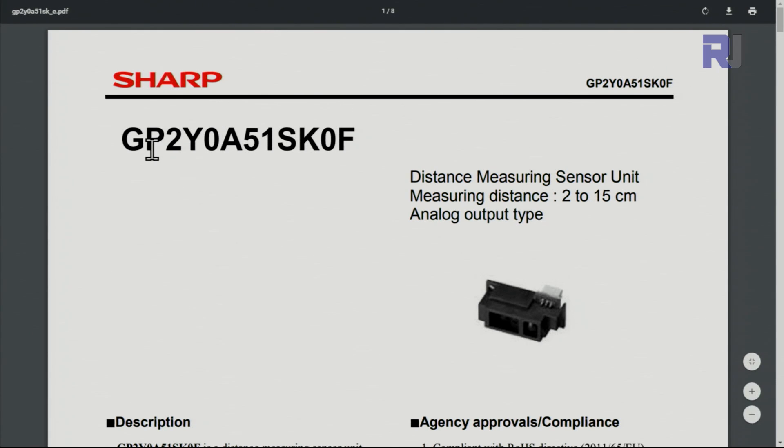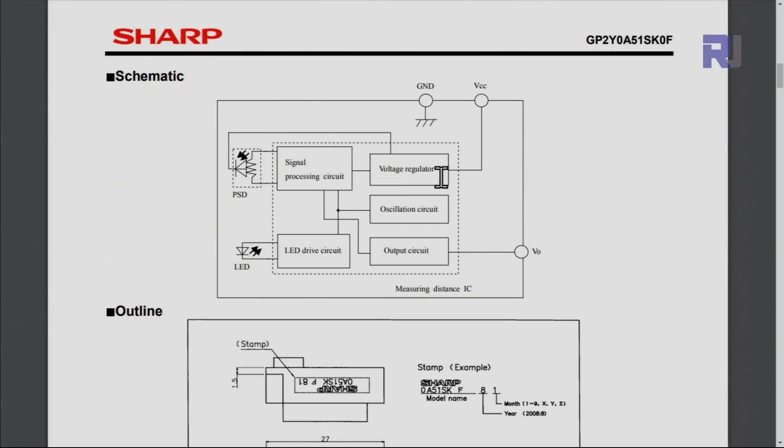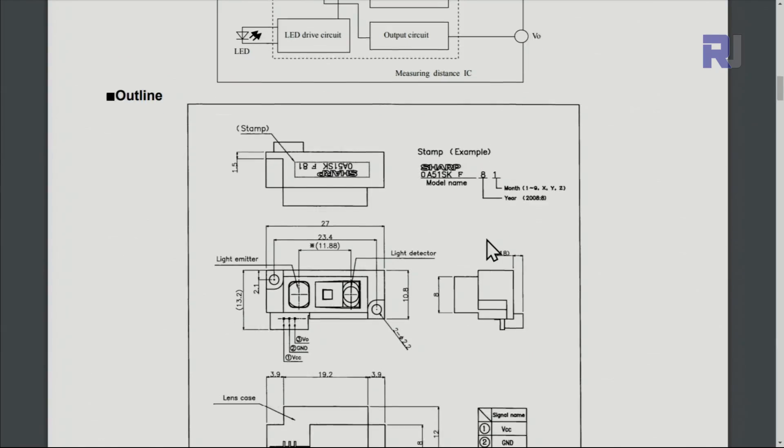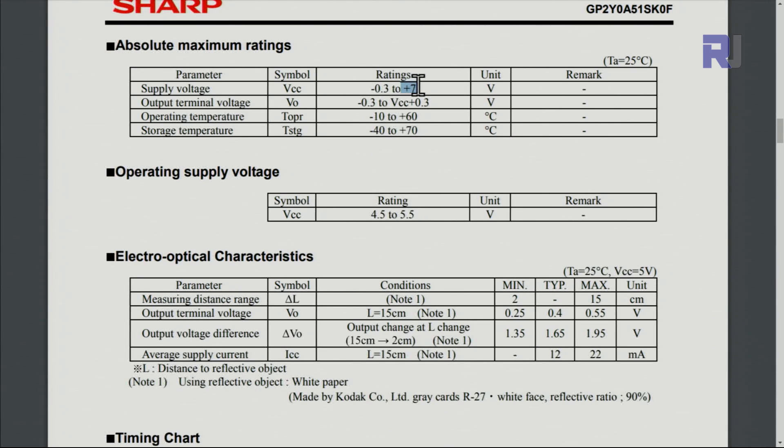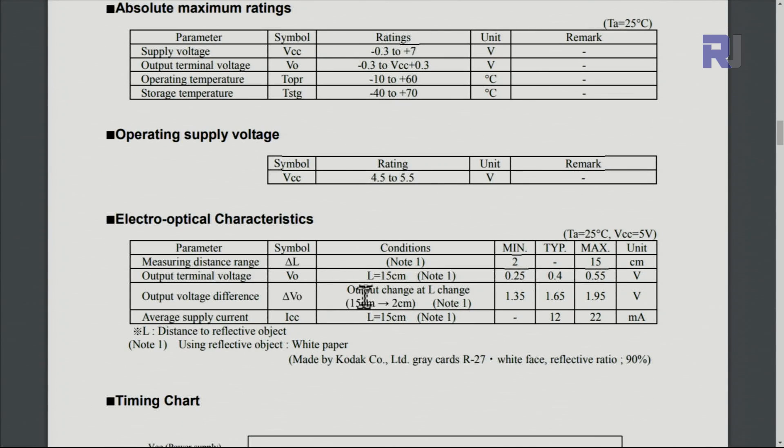Here is the datasheet for GP2Y0A51SK0F from Sharp. This is a block diagram showing how it works - we have an emitter that emits and a receiver which receives it, and the voltage will be proportionally outputted. The operating voltage is from 4.5 to 5.5 volts. At 15 centimeters to 2 centimeters we will be getting 1.35 to 1.95 volts.